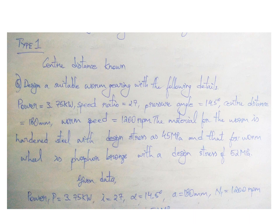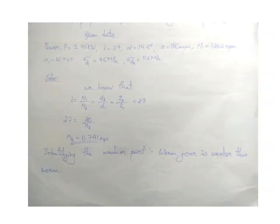So our given data may be like: power P equals 3.75 kilowatt, speed ratio 27, pressure angle alpha 14.5 degree, center distance A 180 millimeter.